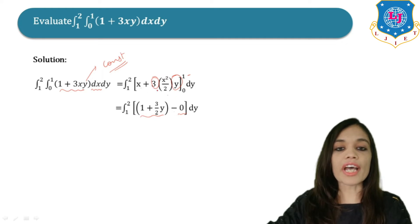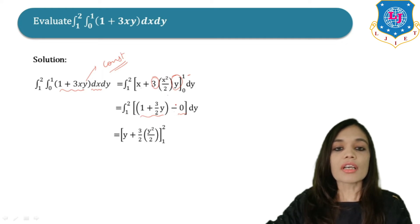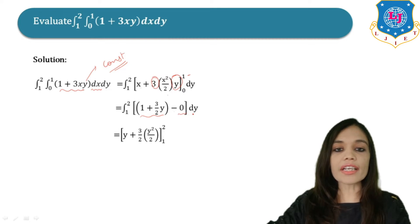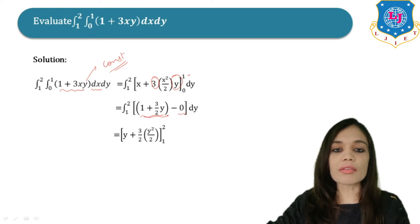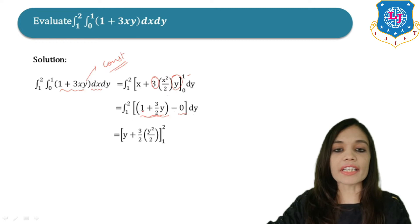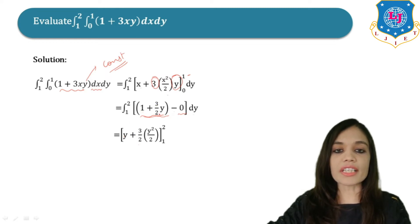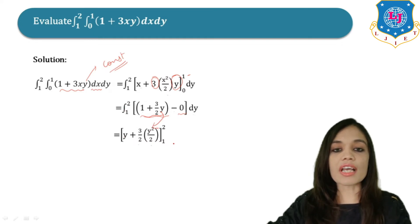Now the final answer will be obtained by integrating with respect to y. Integrating simply with respect to y: the integration of 1 is y. Keep 3/2 as it is. The integration of y is y²/2, and the limits are 1 to 2.